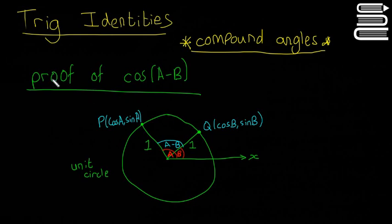In this video, we're going to go through the proof of cos(A minus B), which is a question that can come up on your Leaving Cert. It's all under trigonometric identities. We're going to look at some examples of trig identities in the next video, but this is just a proof.